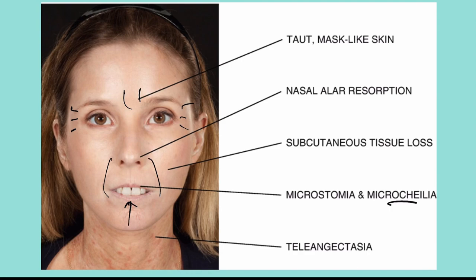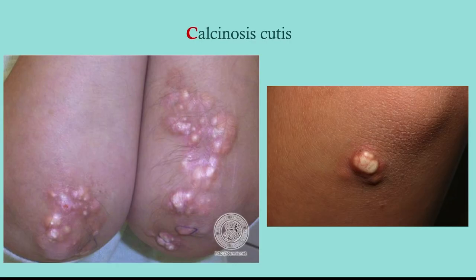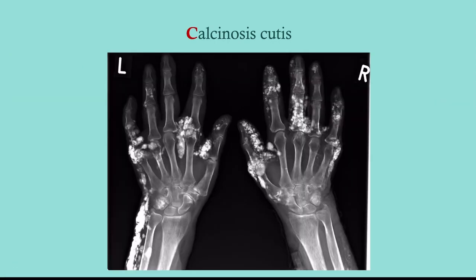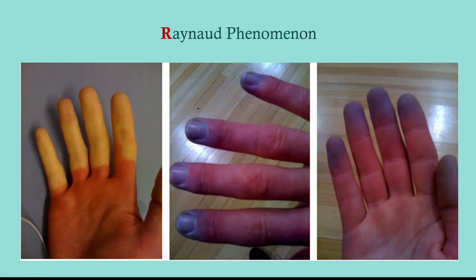Calcinosis cutis are really hard, rocky nodules that you tend to get on extensor surfaces. What does this sound like? Rheumatoid nodules. What's the difference? Rheumatoid nodules are rubbery, but calcinosis cutis is rocky. They can look the same, but when you feel them you can tell the difference. On X-ray you can actually see them — the calcification is visible.